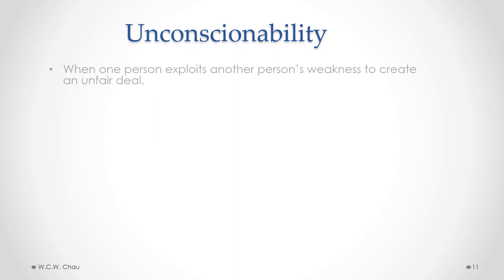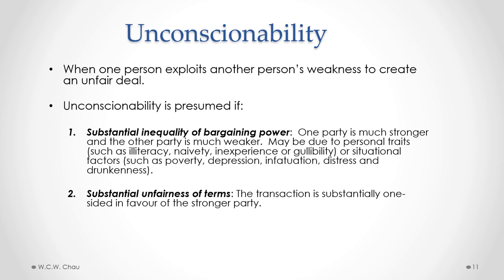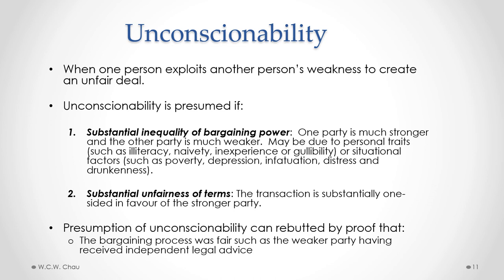The contractual defect of unconscionability is when one person exploits another person's weakness to create an unfair deal. Unconscionability is presumed if we have two things. First, a substantial inequality of bargaining power, where one person is much stronger and the other party is much weaker — this may be due to personal traits such as illiteracy, naivety, inexperience, or gullibility, or situational factors such as poverty, depression, infatuation, distress, or drunkenness. The second requirement is substantial unfairness of terms, where the transaction is substantially one-sided in favor of the stronger party. Once a presumption of unconscionability is raised, it can be rebutted by proof that the bargaining process was fair, such as the weaker party having received independent legal advice before entering into the contract.